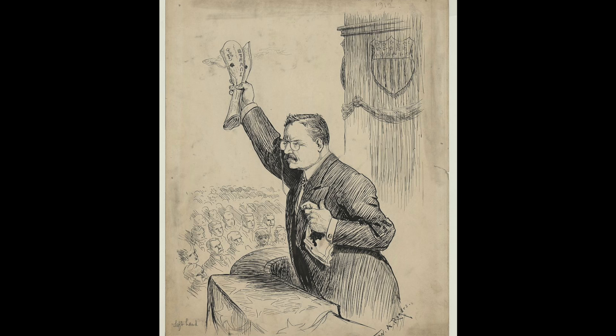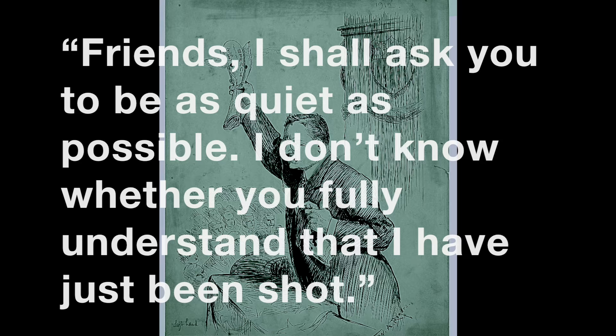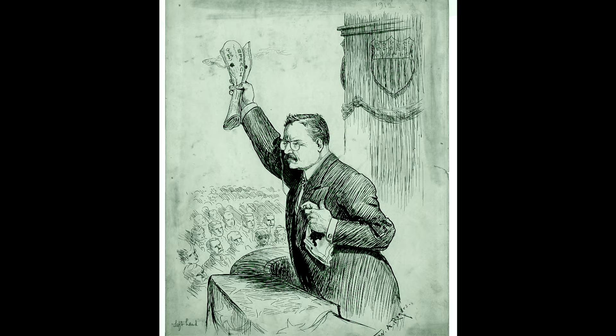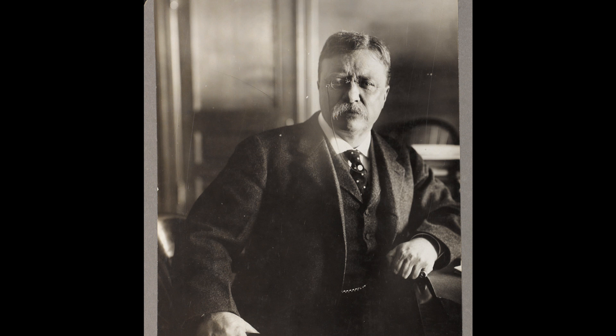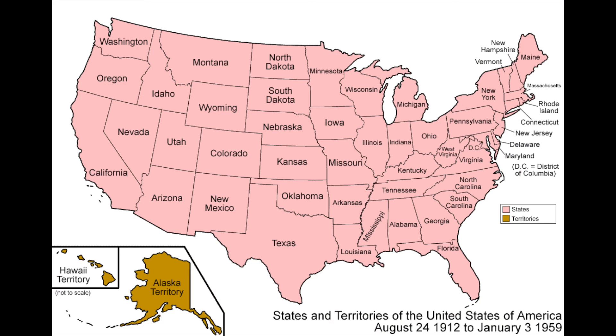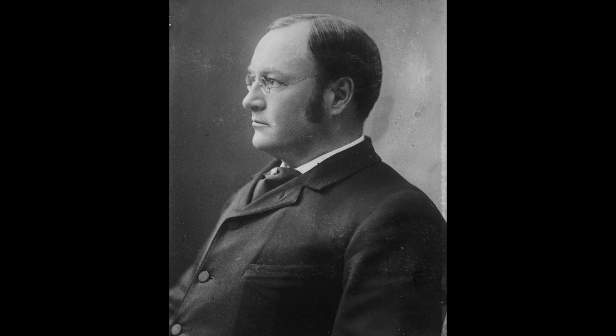Rather than go to the hospital, Roosevelt decided to give the speech anyway. He began his speech saying, "Friends, I shall ask you to be as quiet as possible. I don't know whether you fully understand that I have just been shot." He went on to finish that 90-minute speech like a bull moose indeed. This election marked the first time New Mexico and Arizona participated in a presidential election, as they both became states earlier that year. As Election Day drew near, things were not looking so good for Taft. To make matters worse, less than a week before the election, Vice President Sherman died. Sherman is the last Vice President to have died while in office.